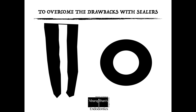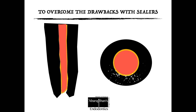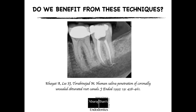All these traditional sealers, including AH Plus, had some limitations and did not meet all the requirements of an ideal sealer. To overcome these drawbacks, thermoplastic techniques became very popular. The aim of thermoplastic or lateral condensation techniques is to have a lot of gutta-percha and very little sealer in the obturation - that is the whole goal of traditional obturation methods.